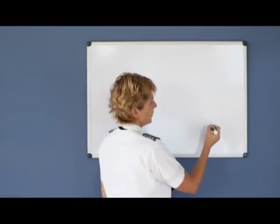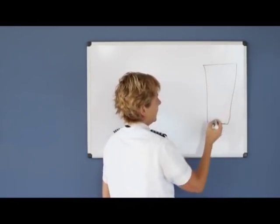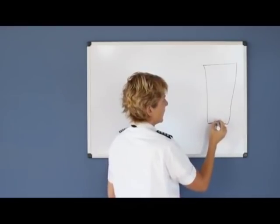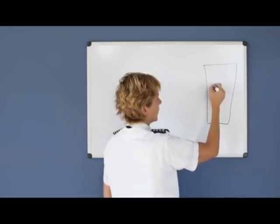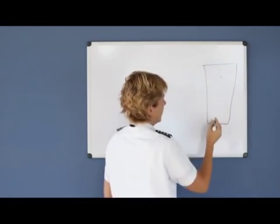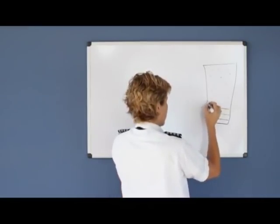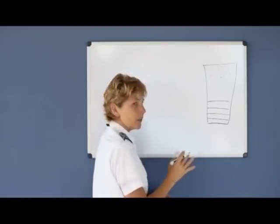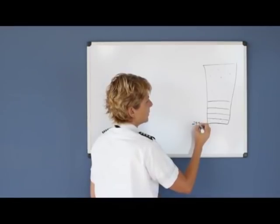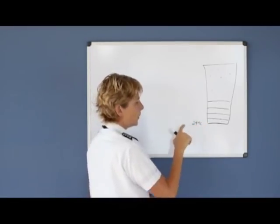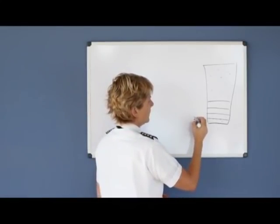So to understand pressure altitude a little better, we have to look back again at a slice of our atmosphere. Remember that the molecules are closer together as we're close to the surface and all of these air molecules are pulled down toward the earth because of gravity. And for every 1,000 feet we go up in the atmosphere, we lose about an inch of mercury per 1,000 feet.